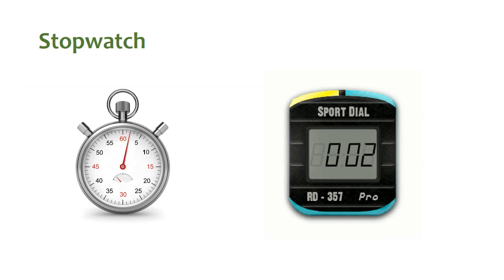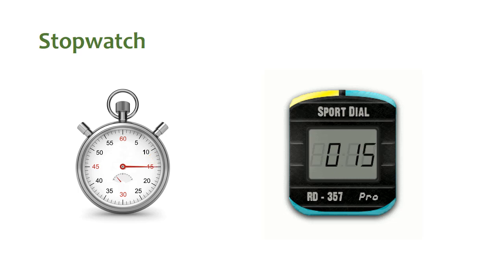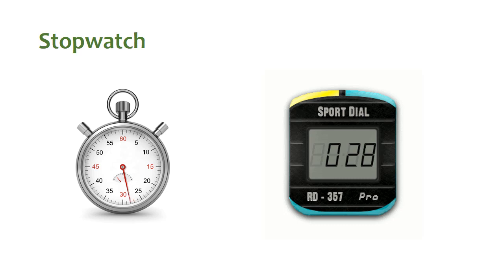Now let's move to the stopwatch. The stopwatch is a time measuring instrument. We have two types of stopwatch: one is analog and the other is a digital stopwatch. The least count for the analog stopwatch is 0.1 seconds and for the digital stopwatch the least count is 0.01 seconds.